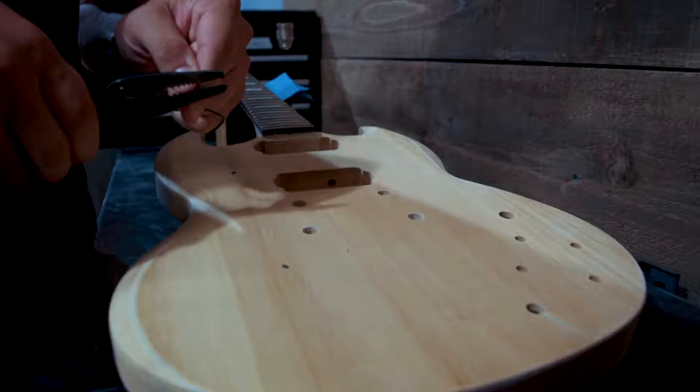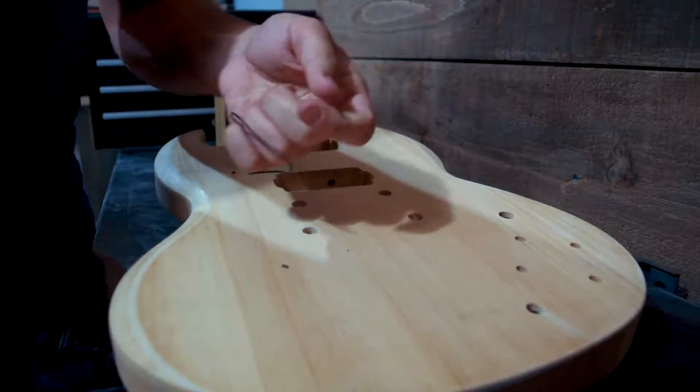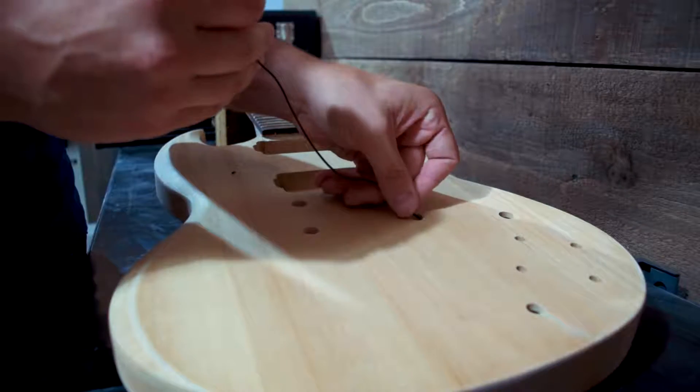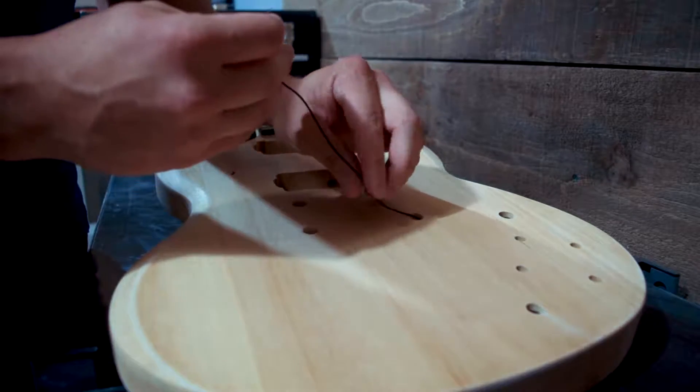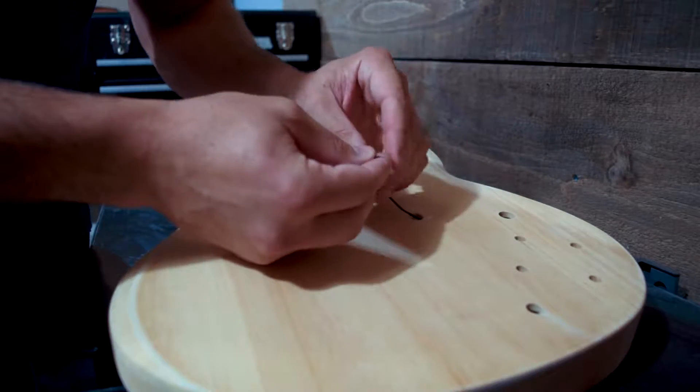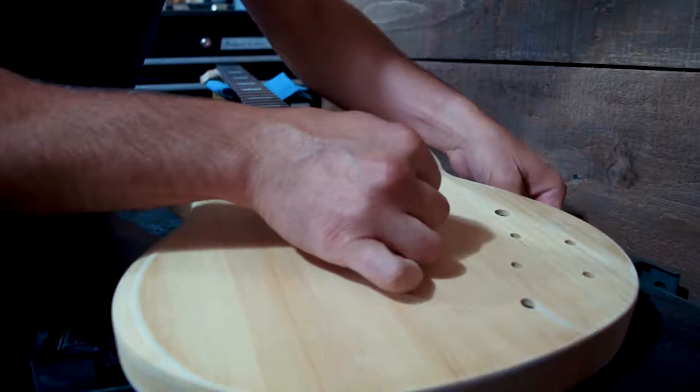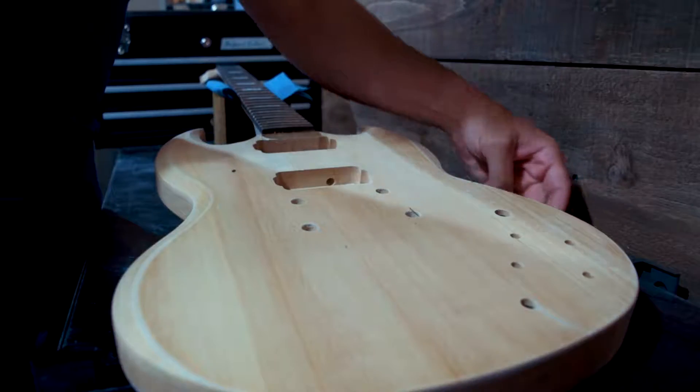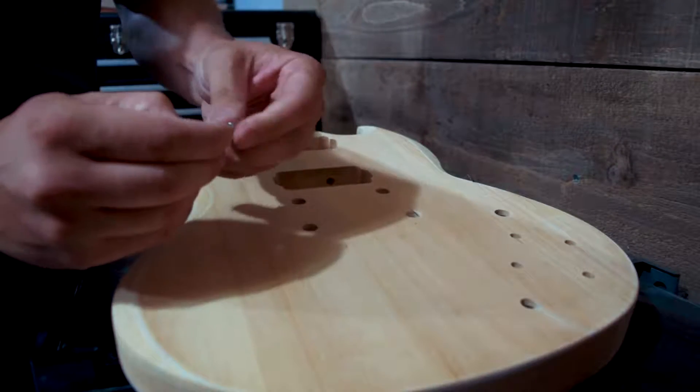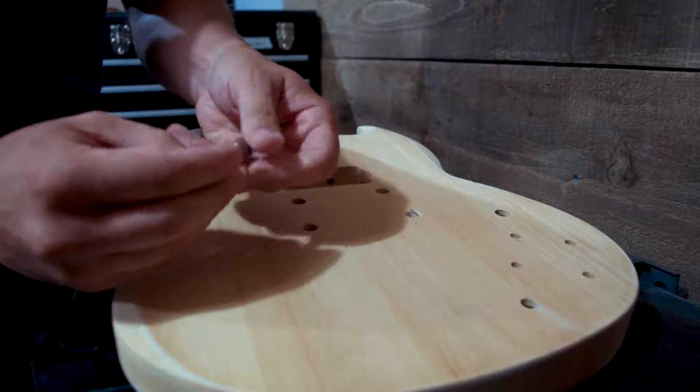We begin here by making sure that our bridge or stop tail is grounded. So we've got a little black wire here that's our grounding cable, and there will be a hole from one of these post holes into the control cavity. So strip the ends of your wire and feed it through there, and make sure that you leave some of the stripped end in the post hole.